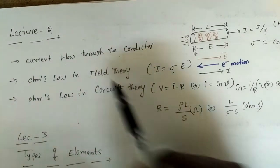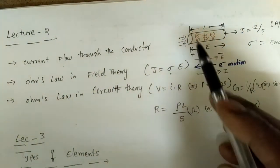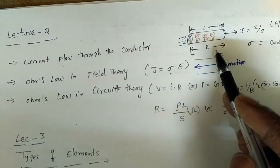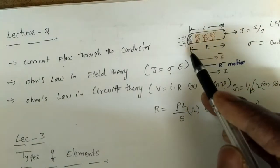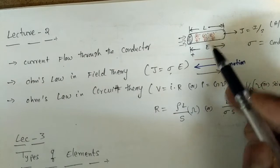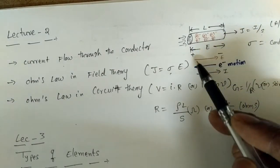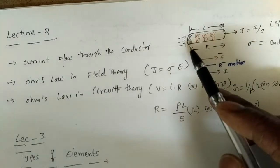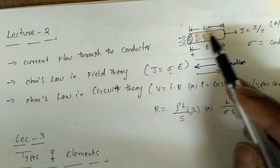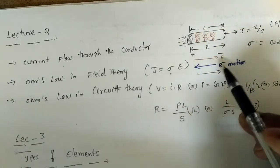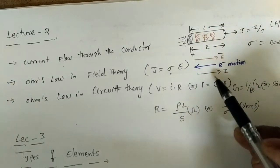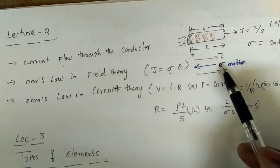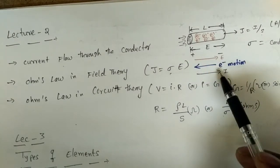Suppose there is a conductor with surface area S. If I apply some electric field E in the direction from left to right, the electron movement will be opposite to the electric field. So the electrons oppose the applied electric field, meaning the electron motion and current direction are opposite.